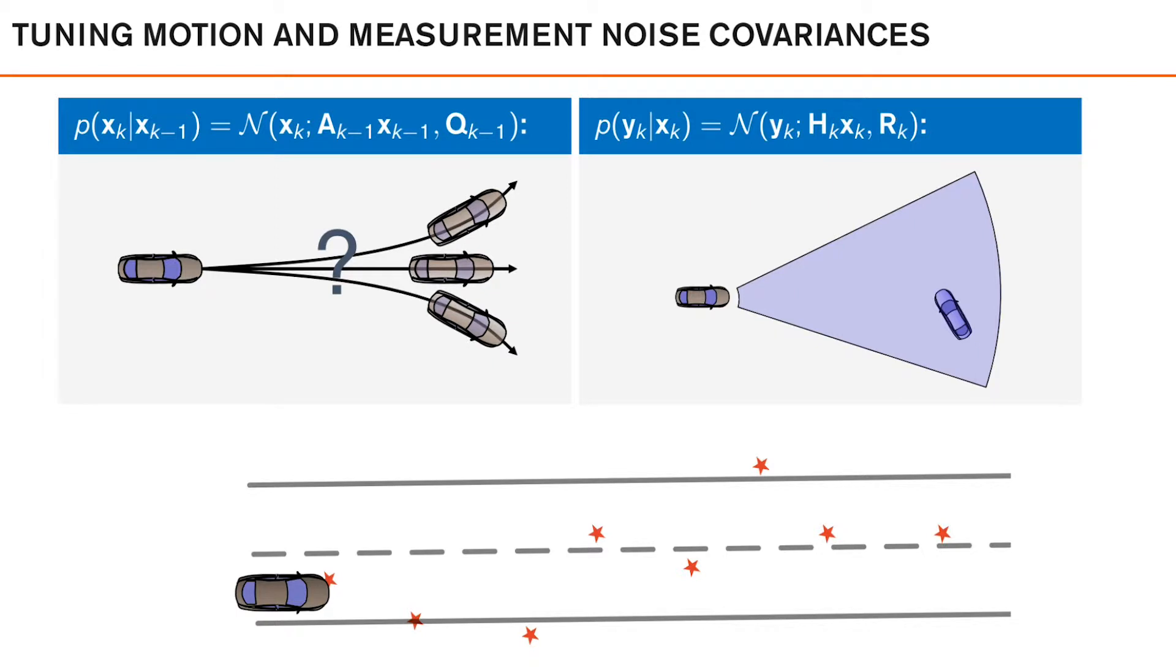To get a feeling for what's happening when we are adjusting our noise parameters, let's look at a toy example where we want to estimate the position of a vehicle using some positioning measurements from some generic sensor. To do this, we need two models.